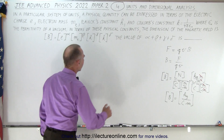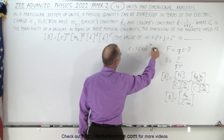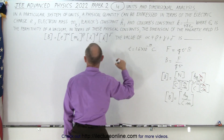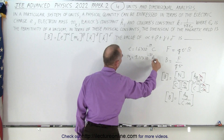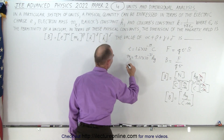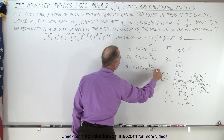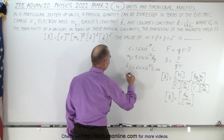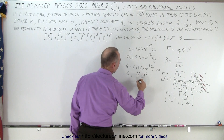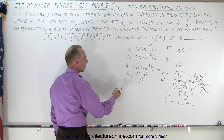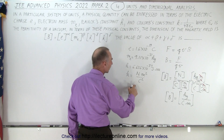The electric charge is 1.6×10⁻¹⁹ coulombs, so coulombs is the unit for electric charge. The mass of an electron is 9.11×10⁻³¹ kilograms. Planck's constant is 6.626×10⁻³⁴ joules times seconds — that's the unit for Planck's constant. And k equals newtons meters squared per coulombs squared, because k times coulombs squared gives the force times distance squared.